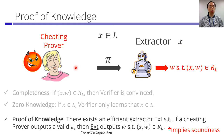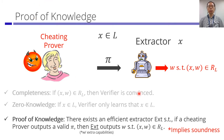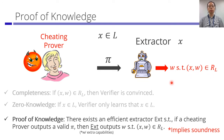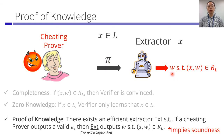We also want a secure notion for cheating provers. We'll be talking about proof of knowledge, which is strictly stronger than soundness. This tells us there exists an extractor such that for any cheating prover that outputs a valid proof pi, we can extract a valid witness W satisfying the relation. This implicitly implies soundness, because if proof pi can be used to extract a witness W, then statement X was actually in the language.